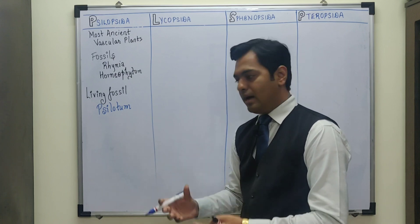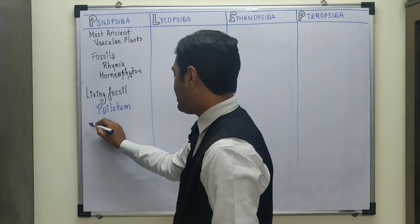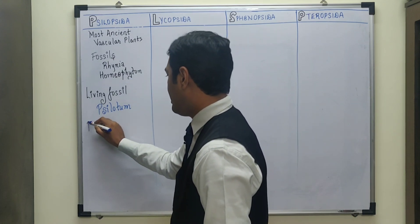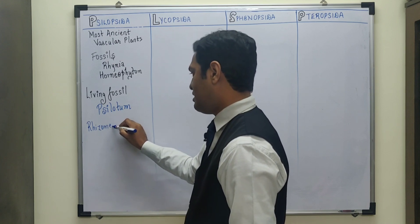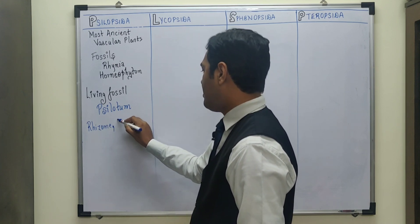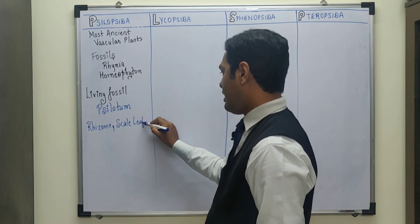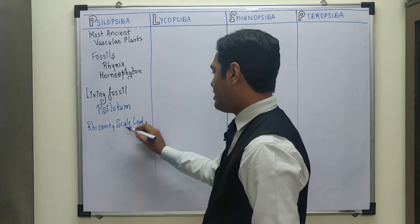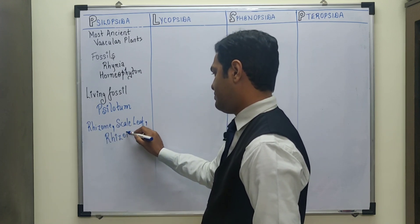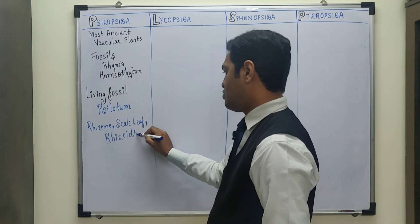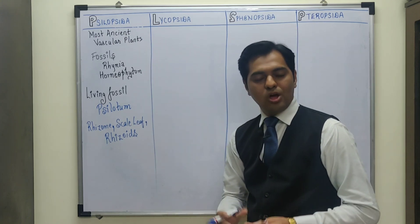In Psilopsida plants, most of them have a presence of rhizome — an underground stem — plus they have scale leaves. The presence of rhizome and scale leaves is the characteristic feature of Psilopsida.